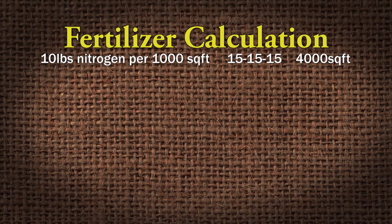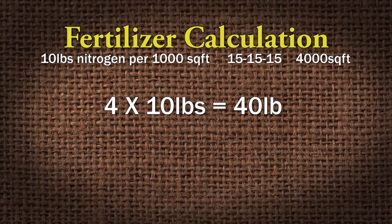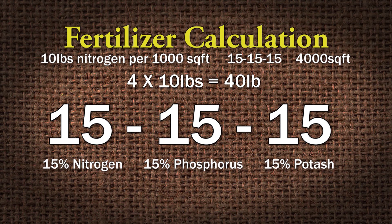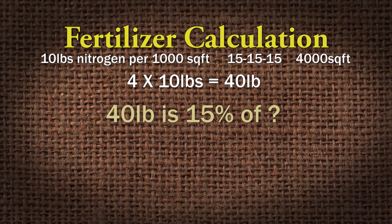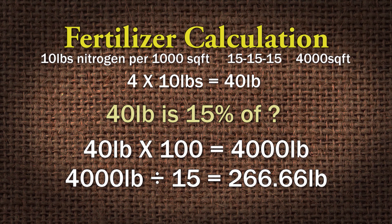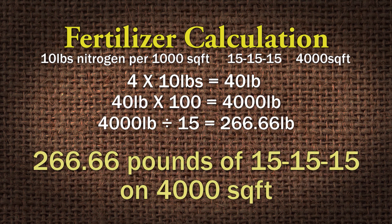10 pounds per thousand square feet, I've got 4,000 square feet — so 4 times 10 is 40 pounds. I need 40 pounds of nitrogen on my 4,000 square feet. And I'm using triple 15, so triple 15 is 15% nitrogen, 15% phosphorus, and 15% potassium. So I've got a 15% material. I set it up: 40 pounds is 15% of what? 40 pounds just happens to be 15% of 266.66, so I need 266.66 pounds of triple 15 on that 4,000 square feet.